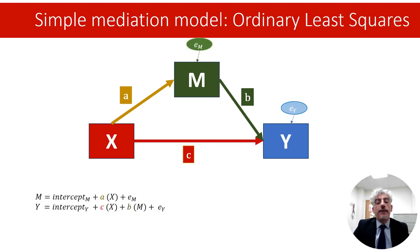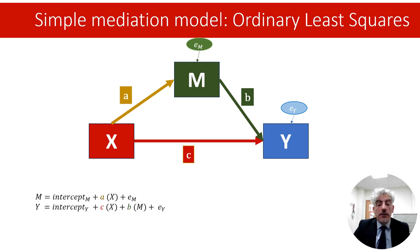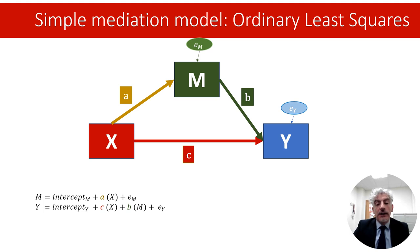Working with this model, if the endogenous variables M and Y are continuous variables, we can apply ordinary least squares methods to estimate the values of these variables as a function of X, in a similar way in which we do when we run linear regression. So we have a first endogenous variable M, which we assume is a function of X. We assume this variable has an intercept M, which represents the value of M when X equals zero. And we also assume we observe this variable with error, and the uncertainty in our measurement of M is represented by the term EM, which we usually assume is normally distributed with mean zero.